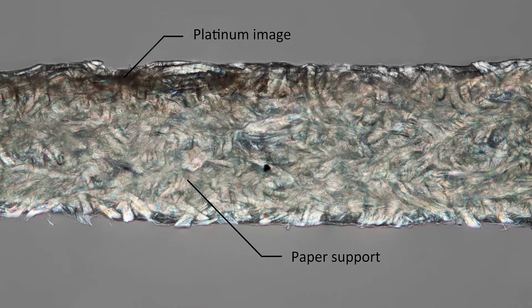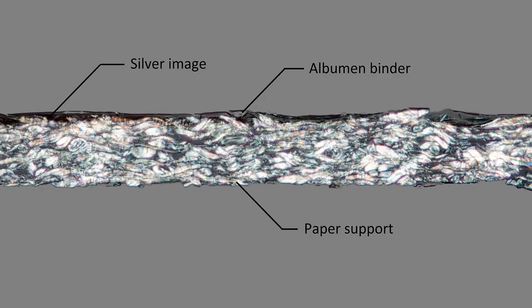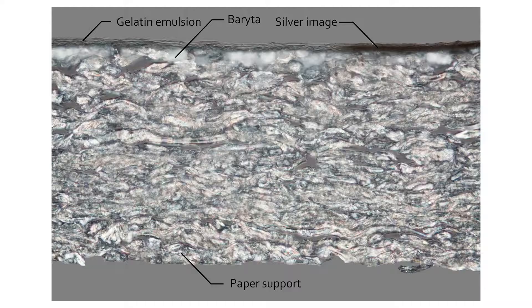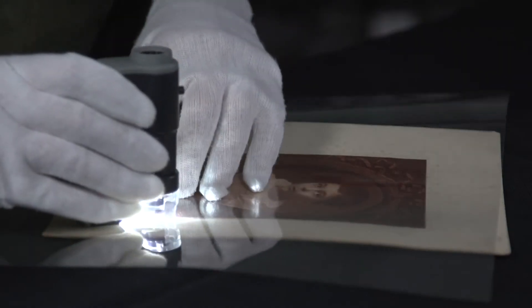In a one-layer photograph, the image is in the paper and it looks as if the fibers are stained with the image material. For one-layer photomechanical and digital prints, the image rests on top of the paper fibers. Alternately, the paper fibers may be visible but the image is above them, indicating the print has a binder or coating — a feature of photographic prints with two layers or a three-layer print with a very thin binder layer. For digital or photomechanical prints, the paper is likely coated. The distinction between the image being in the paper or above the paper can be difficult and takes practice. You can also look at the corners or edges of the print where damage is likely to have occurred, which may reveal how many layers the print has.